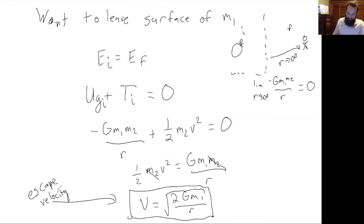In the case of the Earth, m1 would be the mass of the earth and r would be the radius of the earth. So we've derived this escape velocity which is the square root of 2Gm over r.